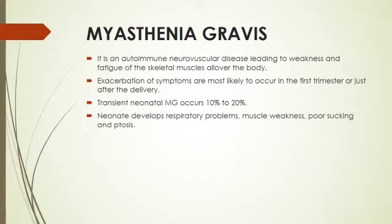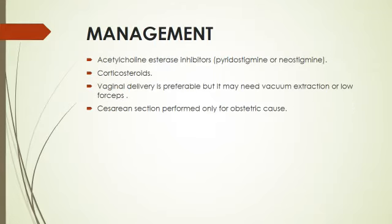Myasthenia gravis is an autoimmune neuromuscular disease leading to weakness and fatigue of skeletal muscles all over the body. Exacerbation of symptoms is most likely to occur in the first trimester or just after delivery. Transient neonatal myasthenia gravis occurs in 10 to 20% of cases. The neonate develops respiratory problems, muscle weakness, poor sucking, and swallowing. Management includes acetylcholinesterase inhibitors: pyridostigmine and neostigmine. Corticosteroids may be used. Vaginal delivery is preferable.